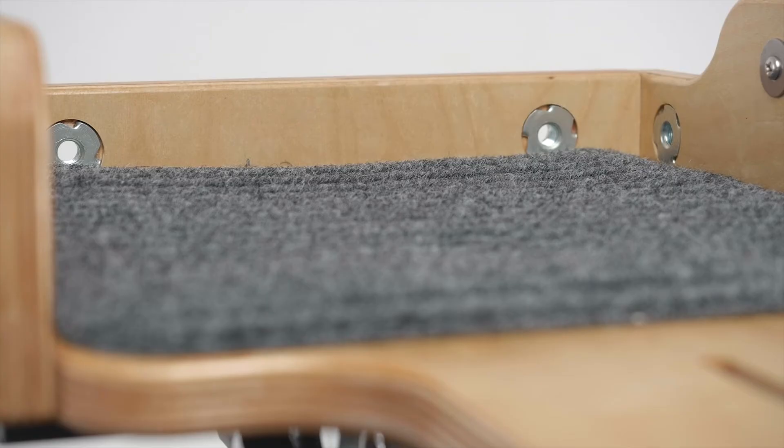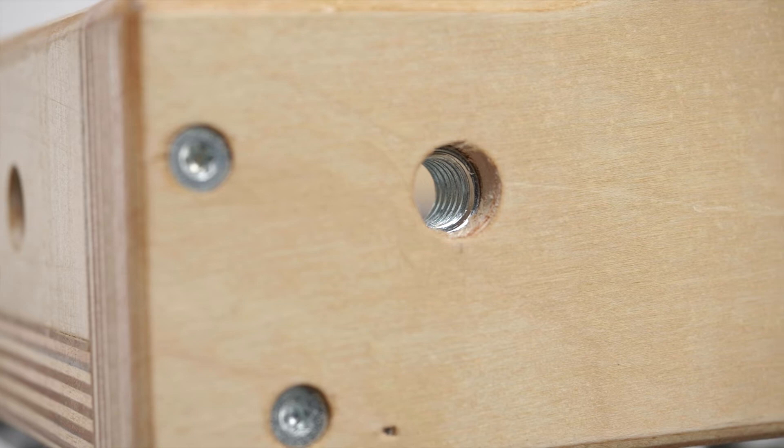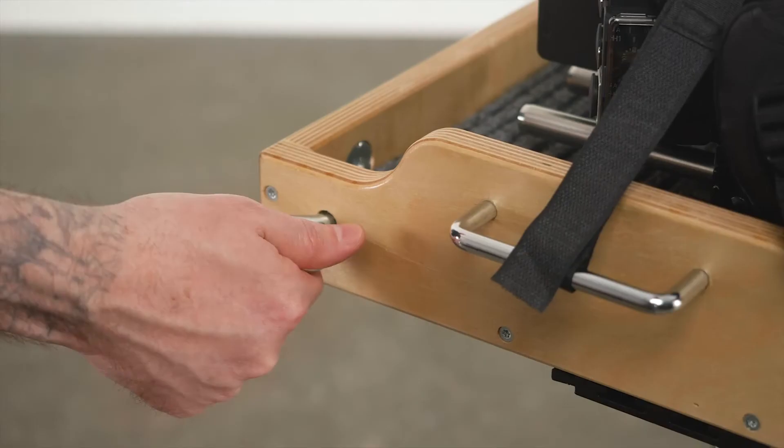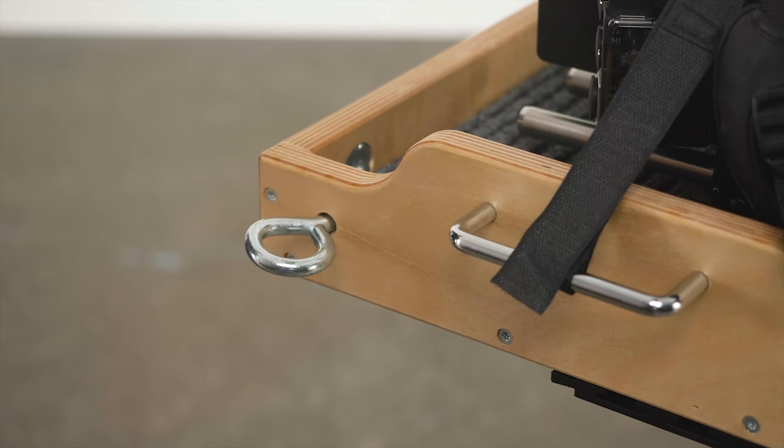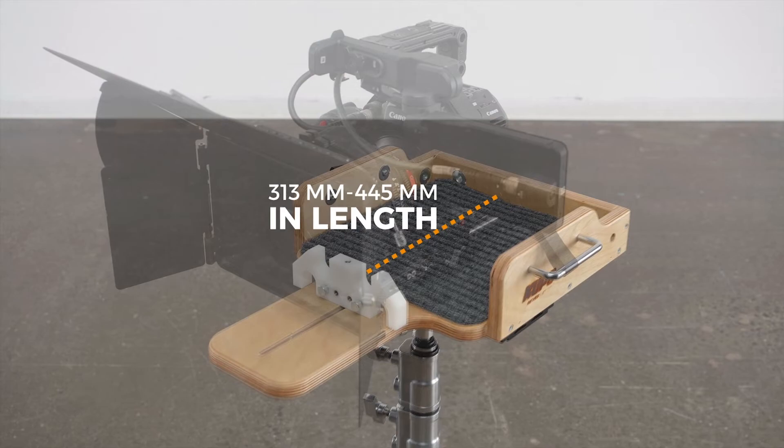Four metal tapped 3/16 inch hole inserts are integrated into the cradle to accept any accessory with a 3/16 inch male thread, such as this 3/16 inch threaded eye hook. The camera cradle can accommodate camera rigs up to 275 millimeters wide and camera rigs from 313 to 445 millimeters in length.